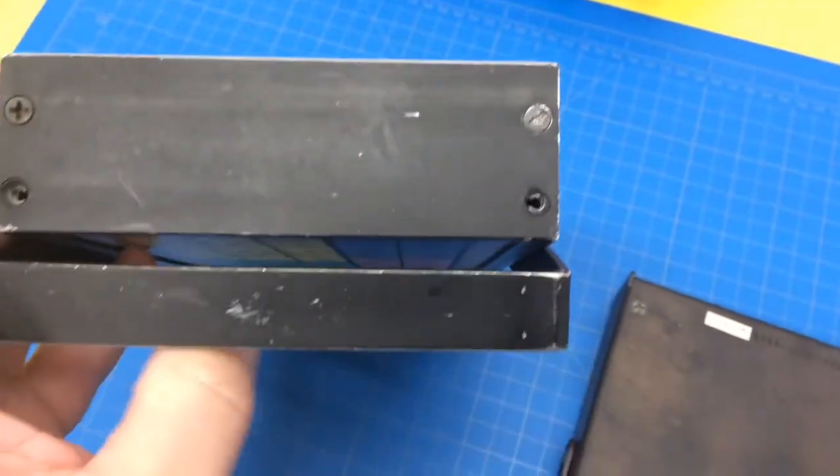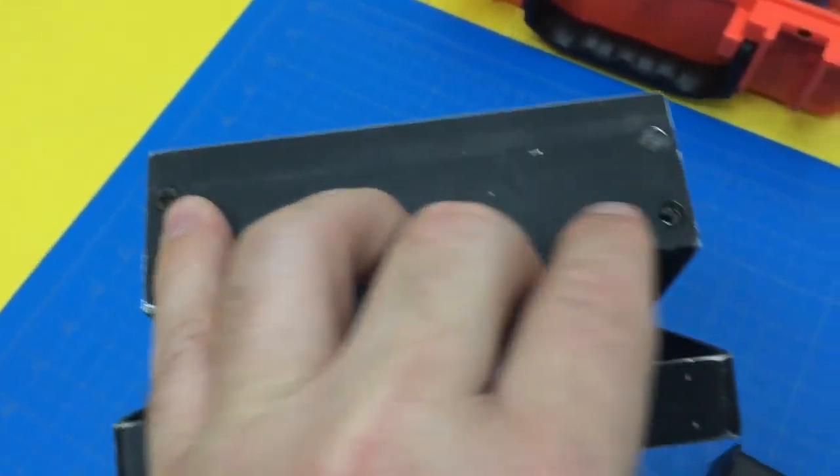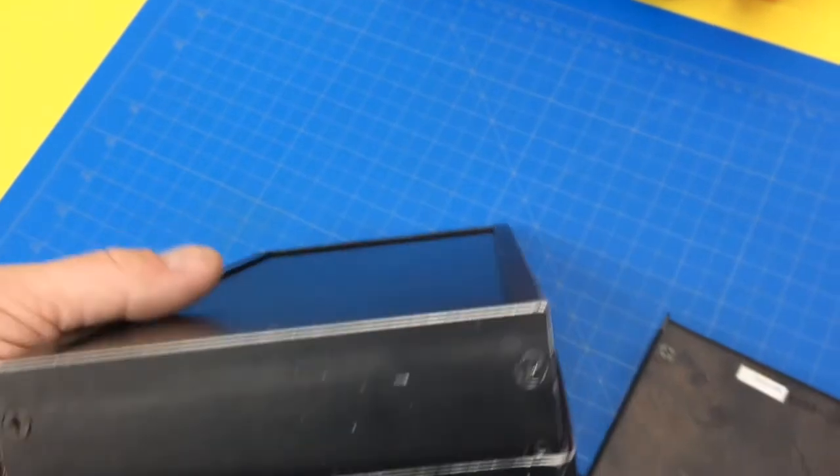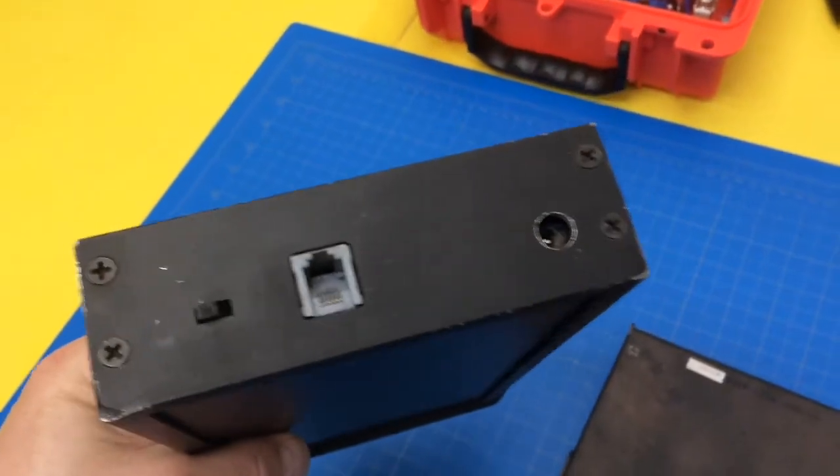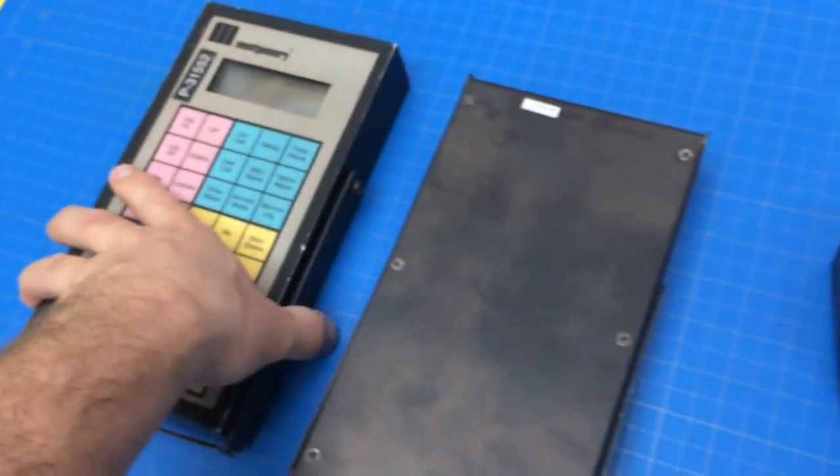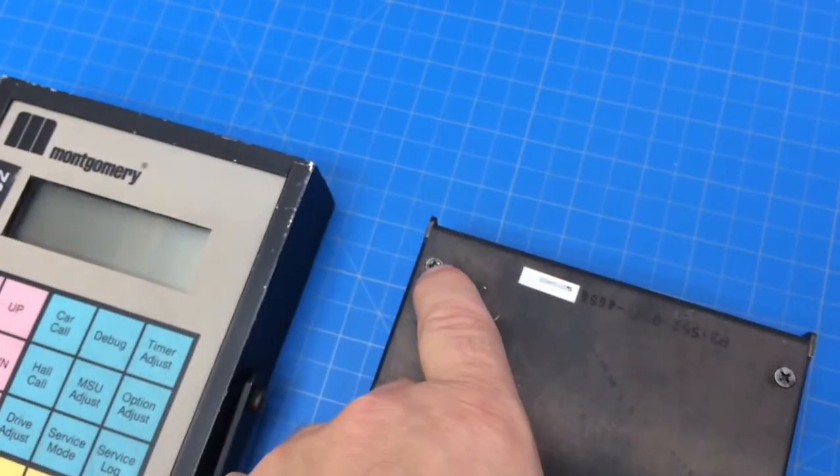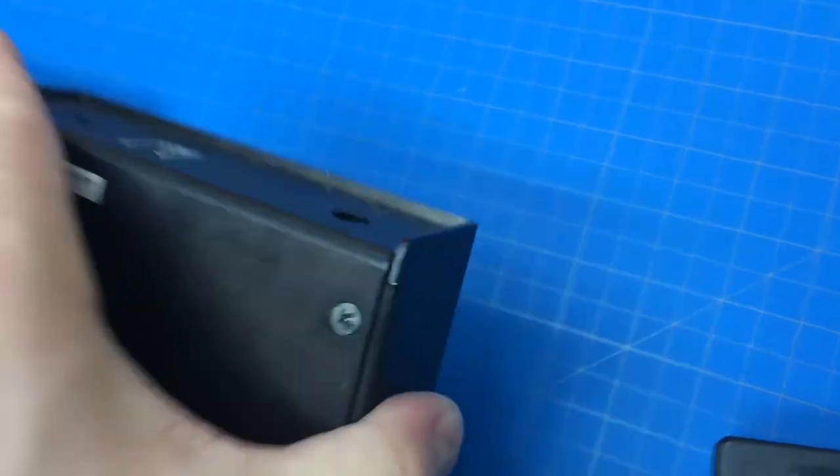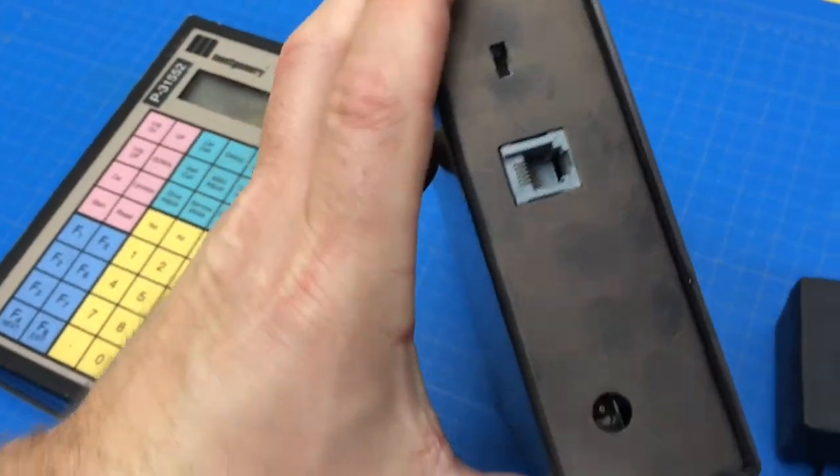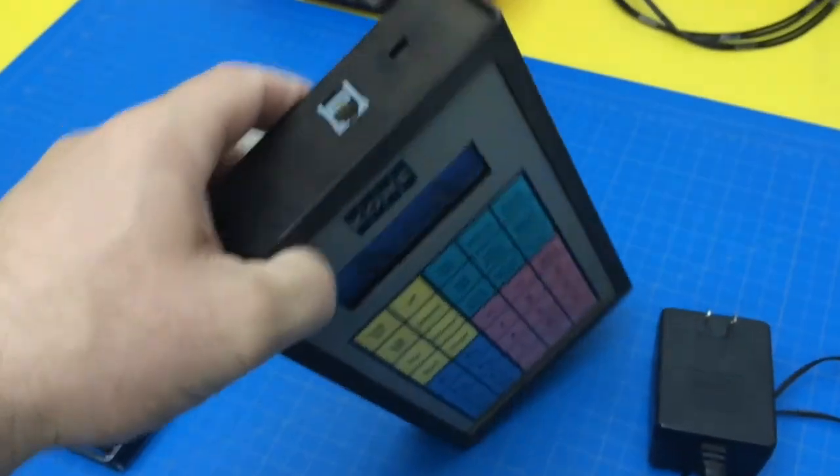It does look like maybe somebody's been working on these. These screws are different - one's Phillips, one's flat, and on the top it's all Phillips. Hopefully we've got the screws we need. A few of these are stripped out, so I'd like to replace them if I have them.